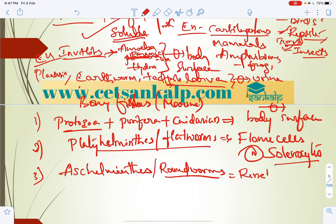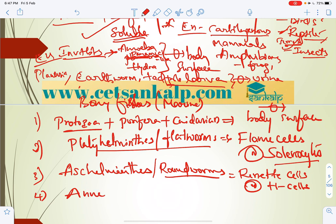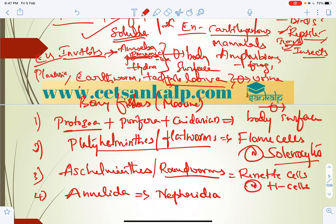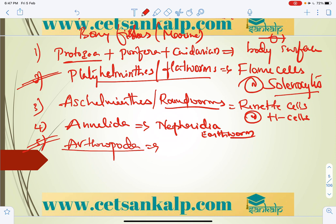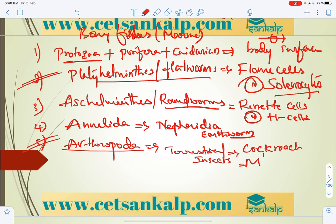In Annelida (e.g., earthworm), the excretory organ is nephridia — tubular structures. In Arthropoda, terrestrial insects like cockroaches use Malpighian tubules. Aquatic arthropods like prawn (Crustacea) use green glands or antennary glands for excretion, and their respiratory organ is gills.